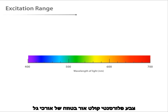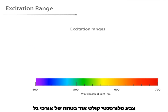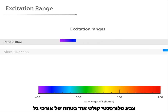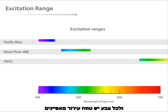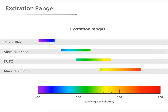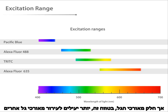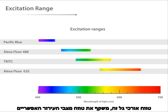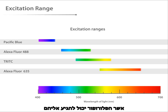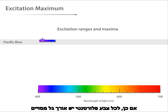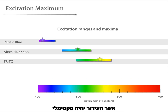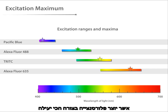A fluorescent dye absorbs light over a range of wavelengths, and every dye has a characteristic excitation range. However, some wavelengths within that range are more effective for excitation than others. This range of wavelengths reflects the range of possible excited states that the fluorophore can achieve. So for each fluorescent dye, there is a specific wavelength — the excitation maximum — that most effectively induces fluorescence.